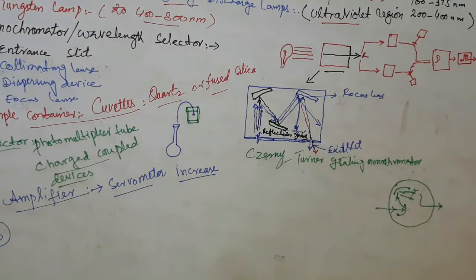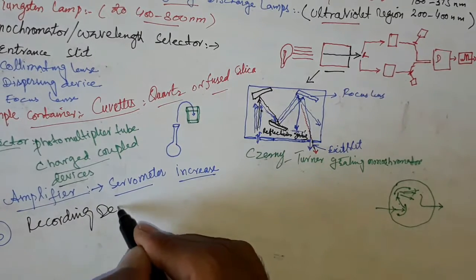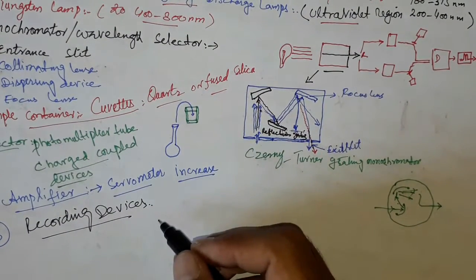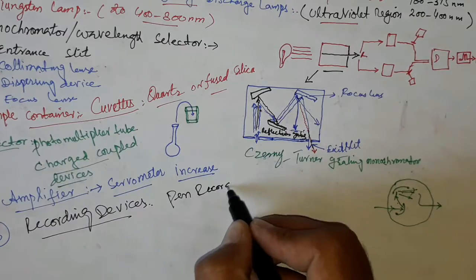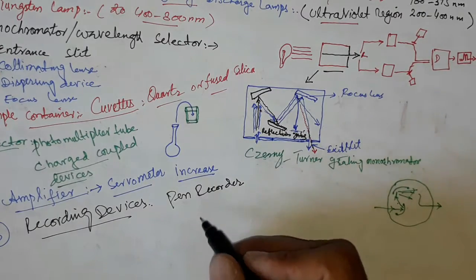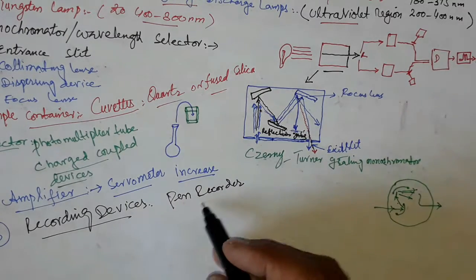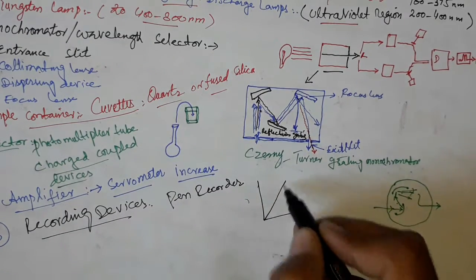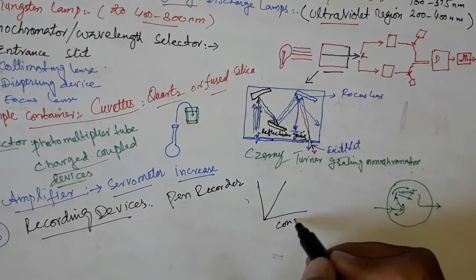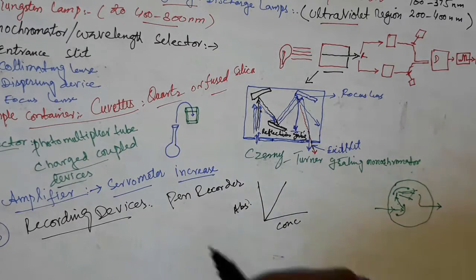The last component is the recording device. Most of the time the amplifier is coupled to a pen recorder which is connected to a computer, and the computer stores all data generated in the form of a spectrum of the desired compound.